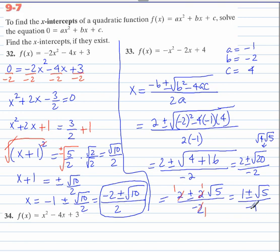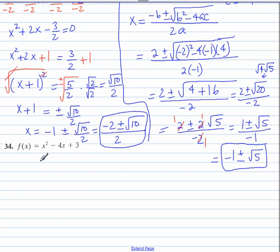We get 1 plus or minus radical 5 all over negative 1. What we're going to do is we're going to distribute this negative to everything on the top. So negative goes to here and it becomes negative. This negative distributed to this plus or minus changes both of these signs. So it becomes plus or minus again. So these are our 2 x-intercepts. You could verify with the calculator.